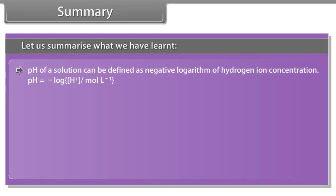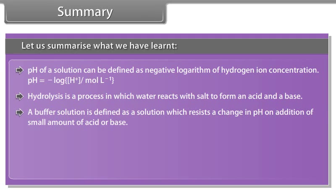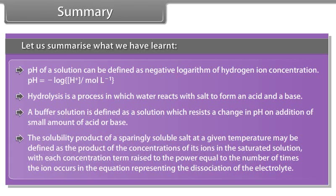pH of a solution can be defined as the negative logarithm of hydrogen ion concentration. Hydrolysis is a process in which water reacts with salt to form an acid and a base. A buffer solution is defined as a solution which resists a change in pH on addition of a small amount of acid or base. The solubility product of a sparingly soluble salt is the product of the concentrations of its ions in the saturated solution, with each concentration term raised to the power equal to the number of times the ion occurs in the dissociation equation.